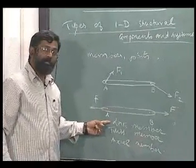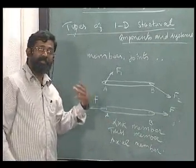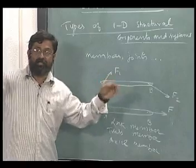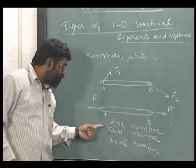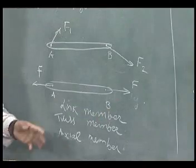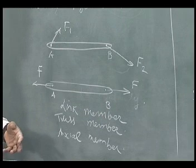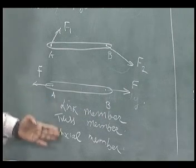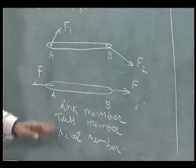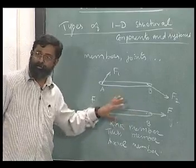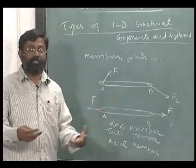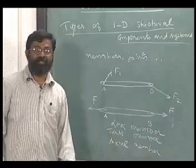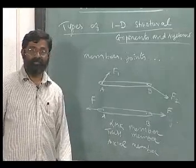This is a member that we came across in earlier examples of rigid bodies. This is a structure called this truss structure which will consist of members of this sort and therefore I can also call them as members of a truss or a truss member. These three names hold good for this particular type. This is a very prevalent type of member that you will see in many structures built in a very simple manner.